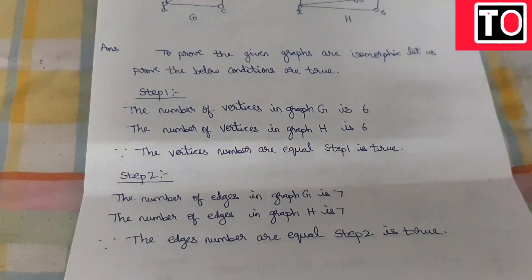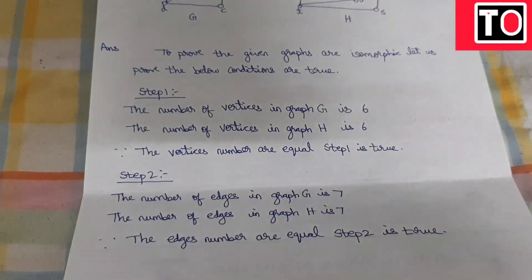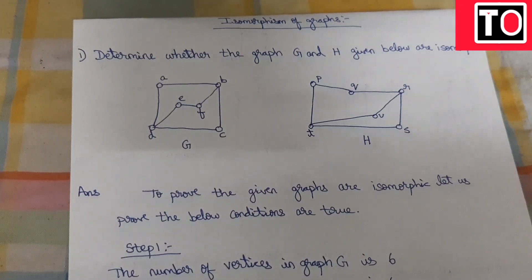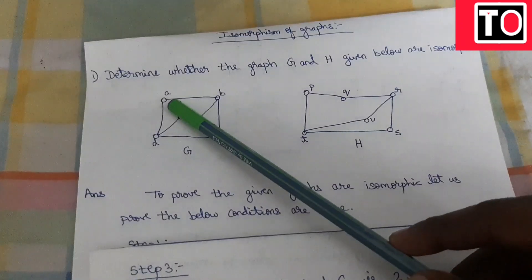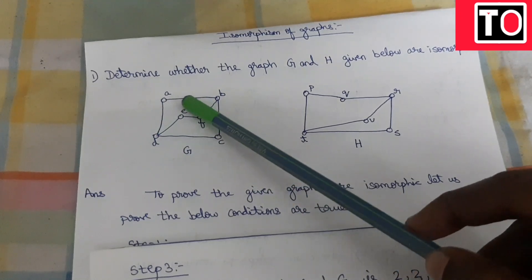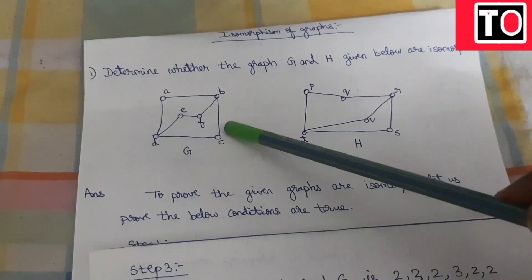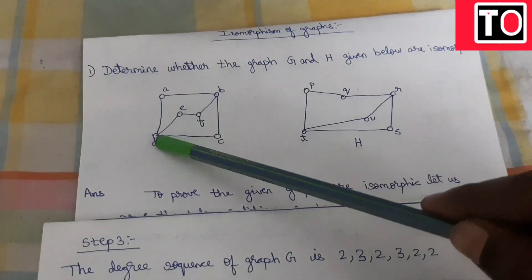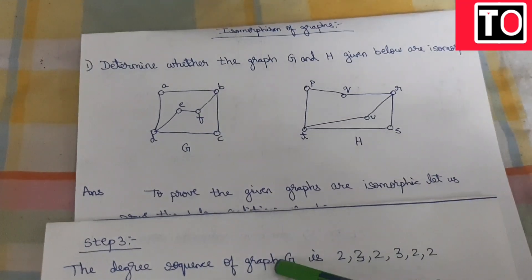Step 3: we look at the degree sequence. The degree is the number of incident edges on a vertex. In graph G: A has degree 2, D has degree 3, C has degree 2, B has degree 3, F has degree 2, and E has degree 2. So graph G's degree sequence is 2, 2, 2, 2, 3, 3.